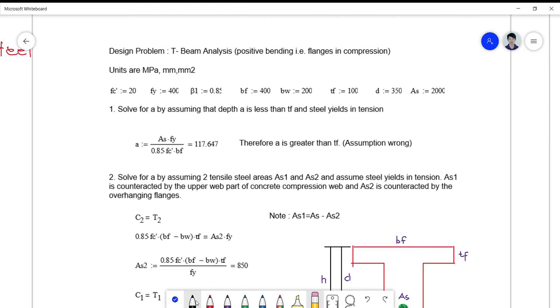This is f'c = 20 MPa. Beta 1 is 0.85 because f'c prime is less than 28. fy = 400 MPa. By the way, BF is the flange width, this is the total flange width. BW is the web width, and TF is the flange thickness.